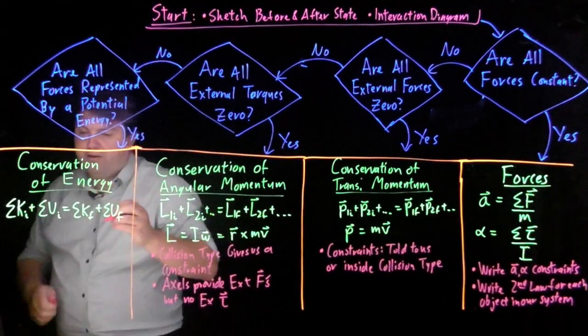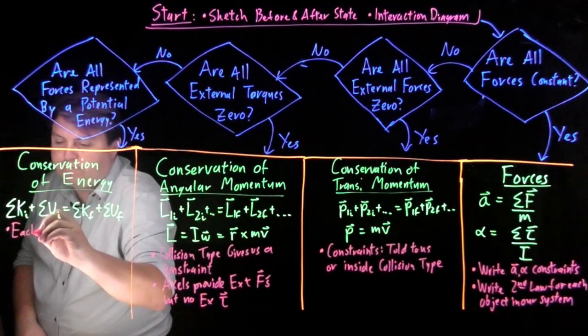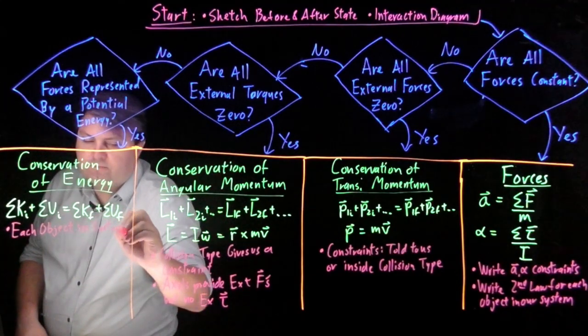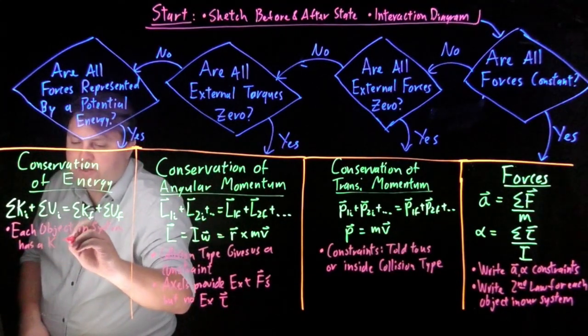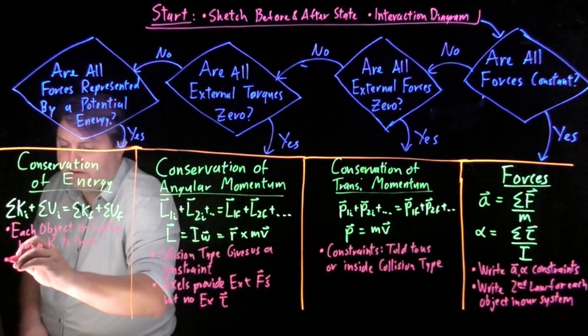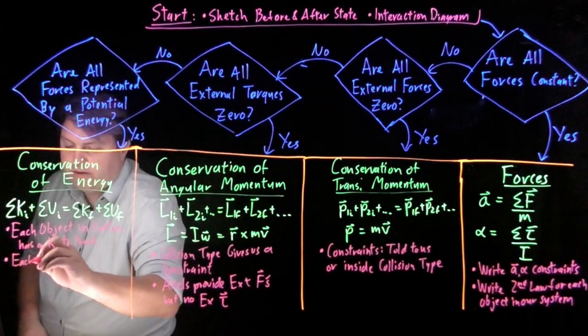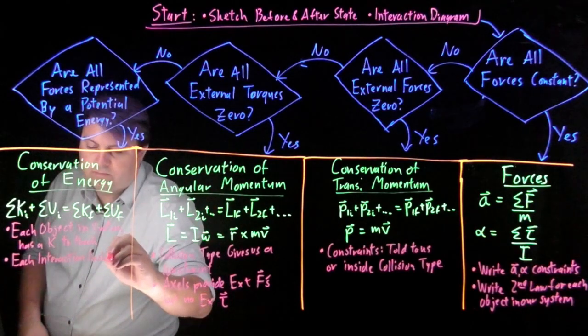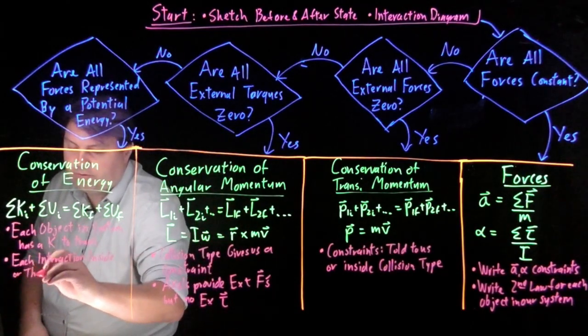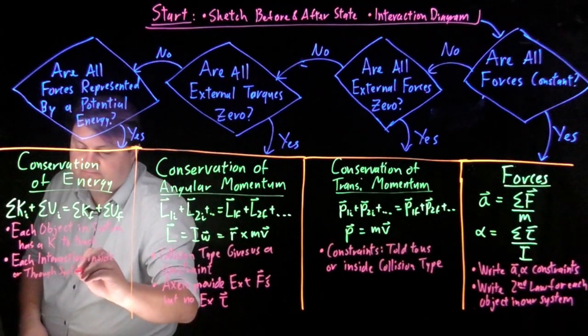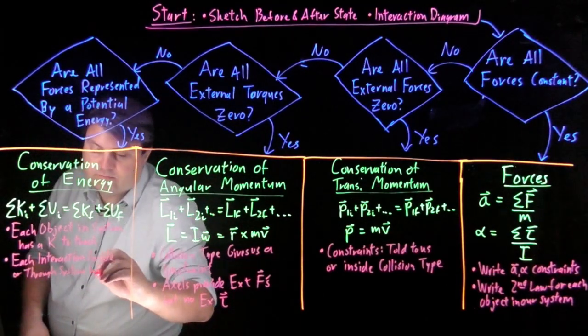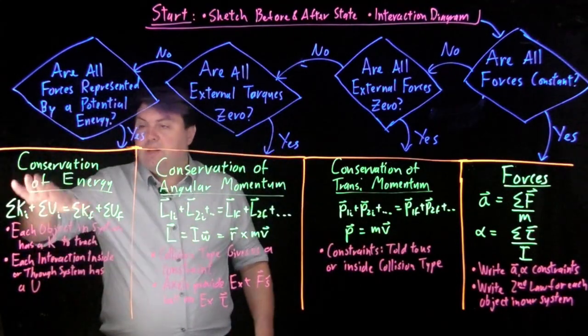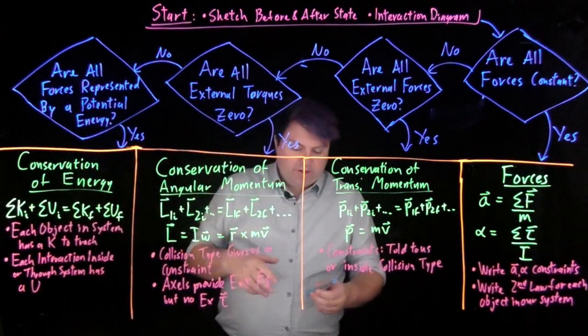So when we have this conservation of energy, each object in system has a kinetic energy to track. And then each interaction inside the system or through our system has a potential energy. So that's what we have for conservation of energy.